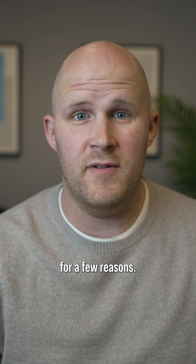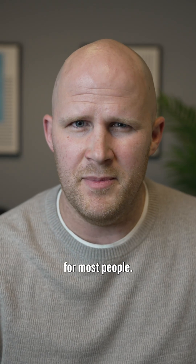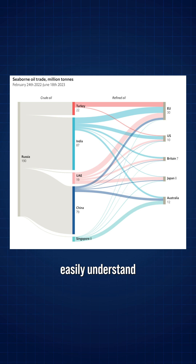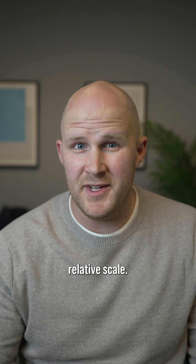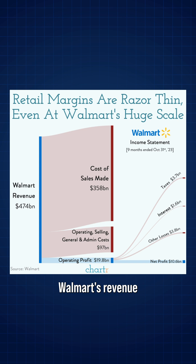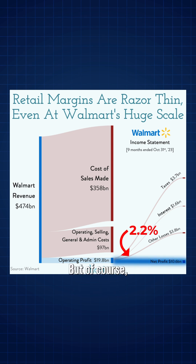Sankey diagrams can be good for a few reasons. The first is that they're pretty intuitive for most people. When I look at this, I can easily understand what's happening, and if I wanted to follow the flow of oil from Russia to India to Australia, it wouldn't take much effort. They're also good for showing relative scale. This one shows Walmart's revenue breakdown, and you can get a good visual representation of how much profit they make on nearly half a trillion in revenue — in this case about 2%.